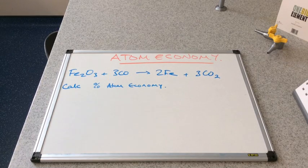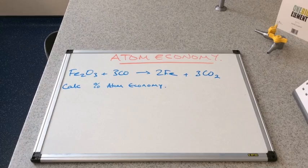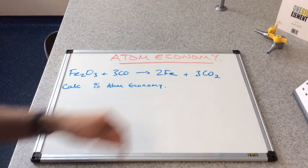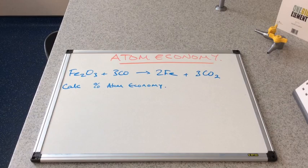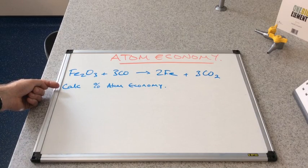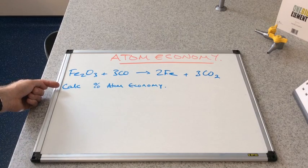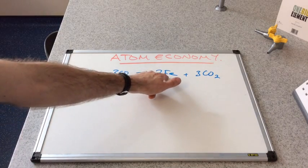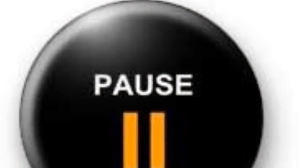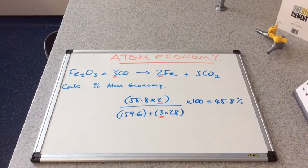So just to finish with this one, this is slightly different because we've got some balancing numbers now to contend with. So just see how we fare with this. So it's the reaction from the blast furnace, and all I want you to do is calculate the percentage atom economy for the production of iron.